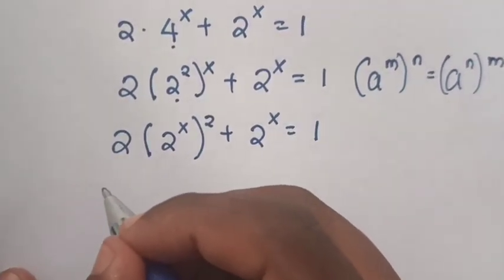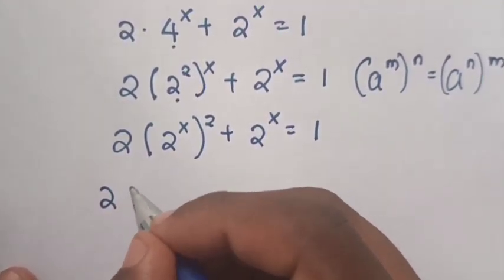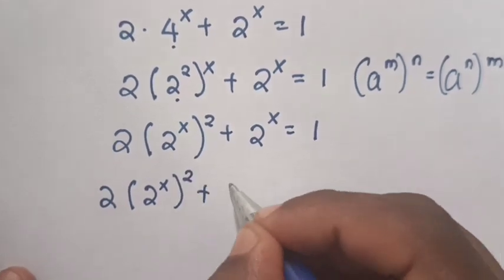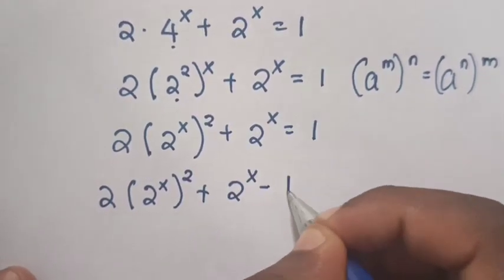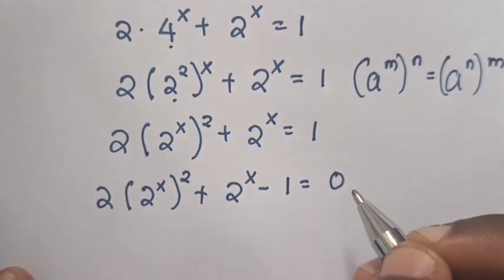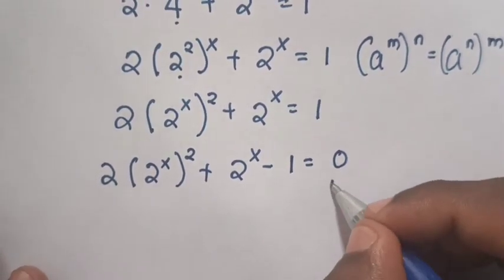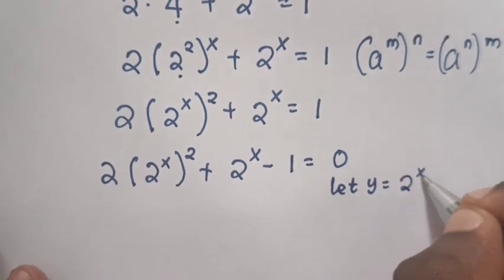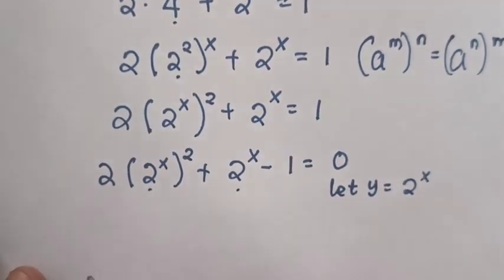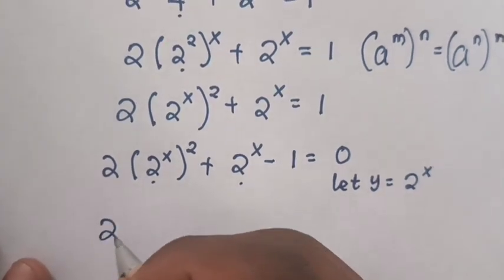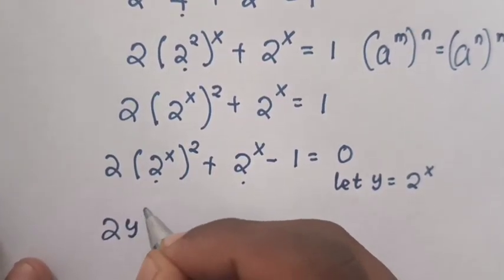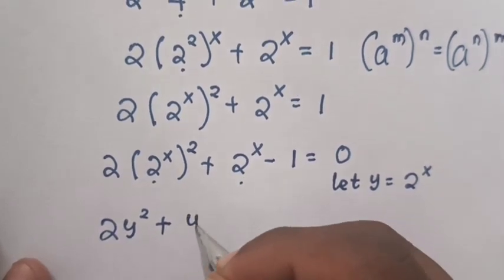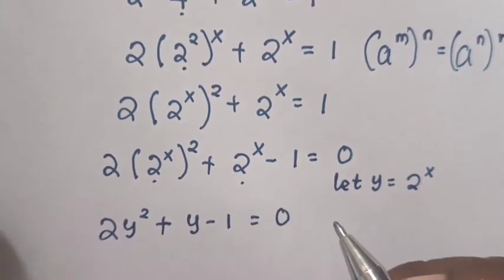Now we take 1 to the left side. It will be 2 bracket 2 power x bracket power 2 plus 2 power x minus 1 equals 0. From here, we let y equal to 2 power x, so our equation becomes 2y squared plus y minus 1 equals 0.